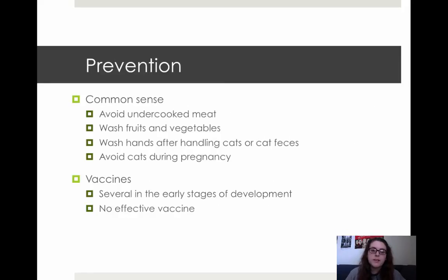The easiest way to prevent toxoplasmosis is through common sense: don't eat undercooked meat, make sure you're washing your fruits and vegetables, wash your hands after handling cats or cat feces, and if you're pregnant, it would be wise to avoid all types of interaction with cats. Currently, there are no effective vaccines against this, although there are several that are in the early stages of development.